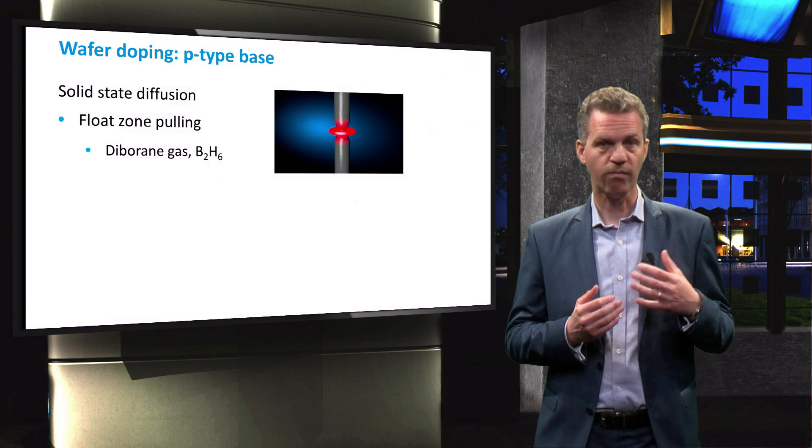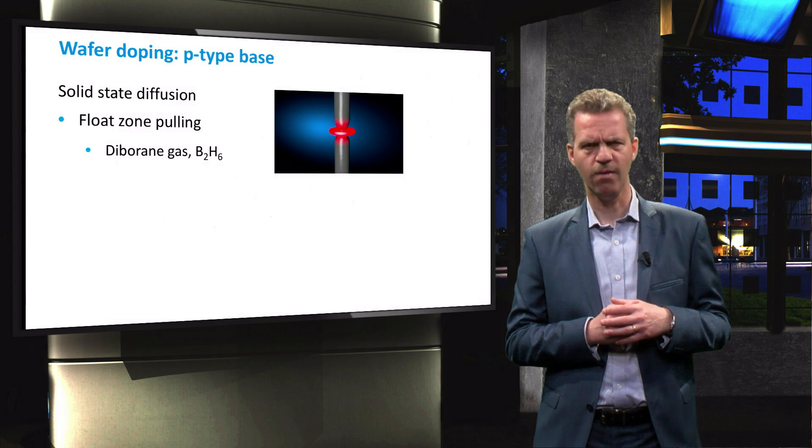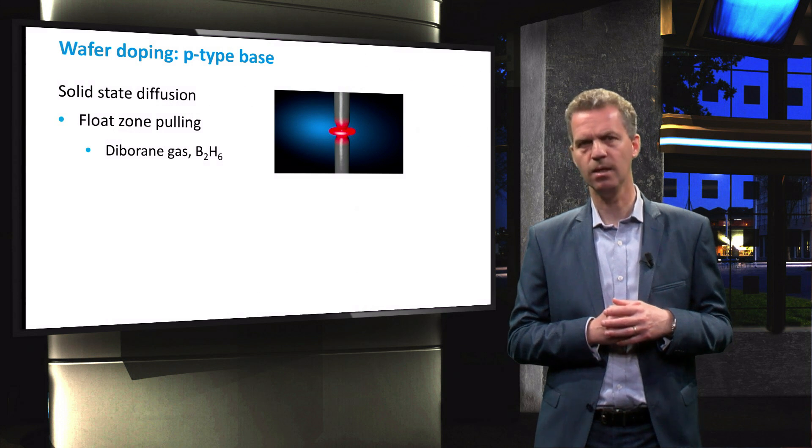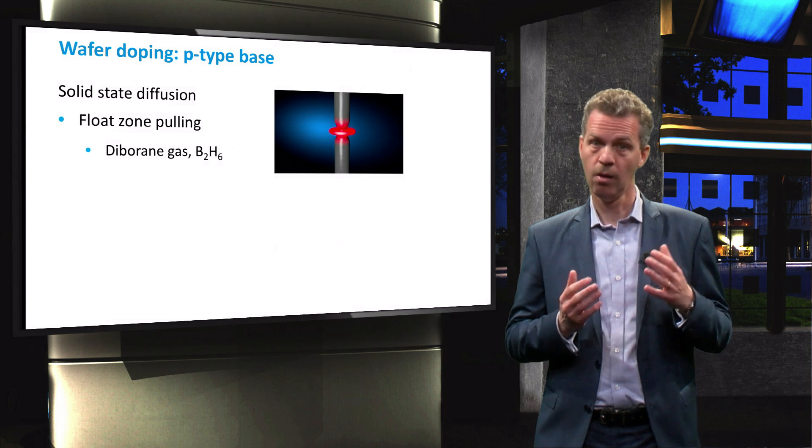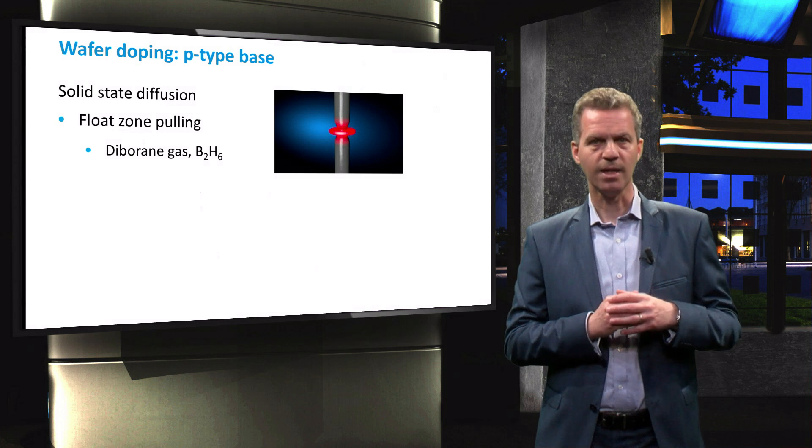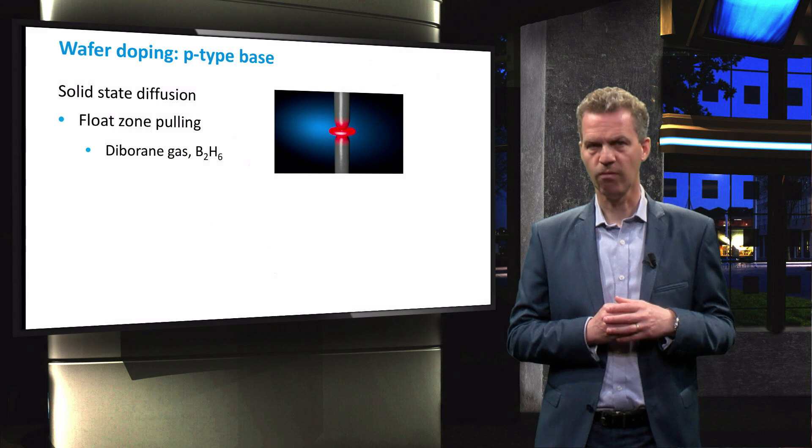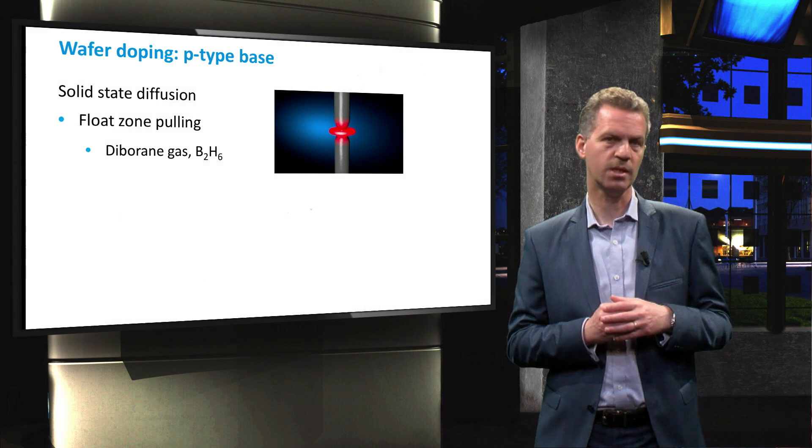The process of converting polysilicon rods into monocrystalline silicon ingots with very high purity takes place in an inert gas environment, most commonly in argon. By adding diborane gas, B2H4, to the inert environment, a uniformly doped ingot is obtained by diffusion of boron atoms into the molten silicon.